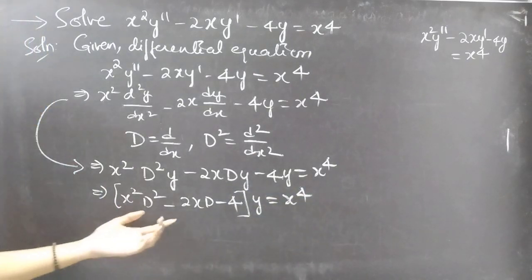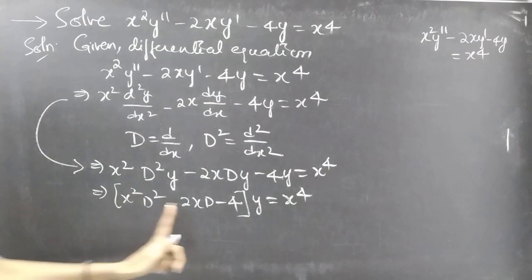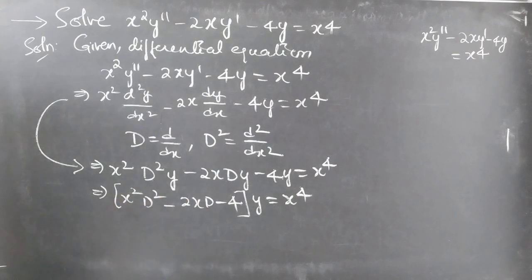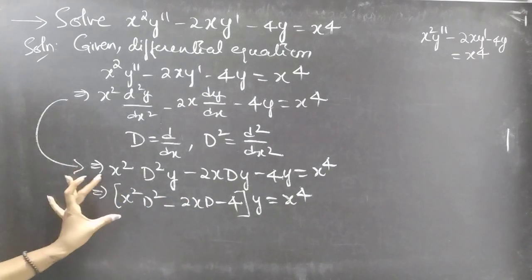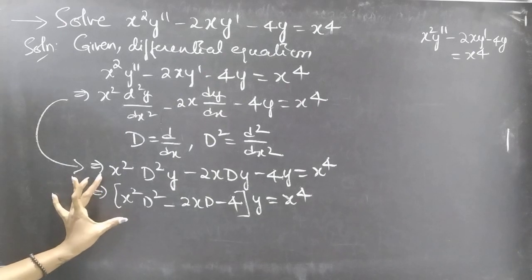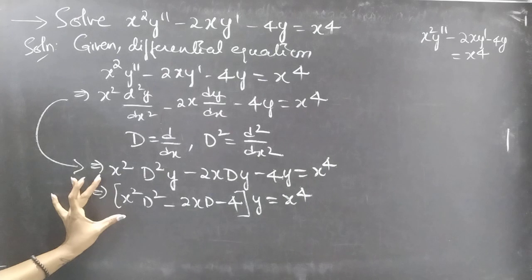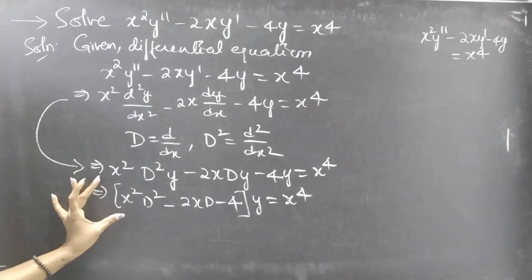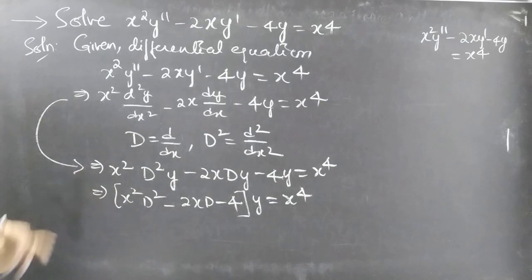Now we have an equation with variable coefficients, and this is also a Cauchy's equation. We are going to reduce this equation to a differential equation with constant coefficients by making a simple substitution.